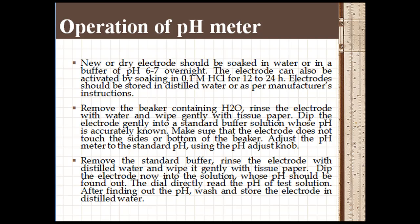Remove the standard buffer, rinse the electrode with distilled water and wipe it gently with tissue paper. Dip the electrode now into the solution whose pH should be found out. The dial directly reads the pH of the test solution. After finding out the pH, wash and store the electrode in distilled water.